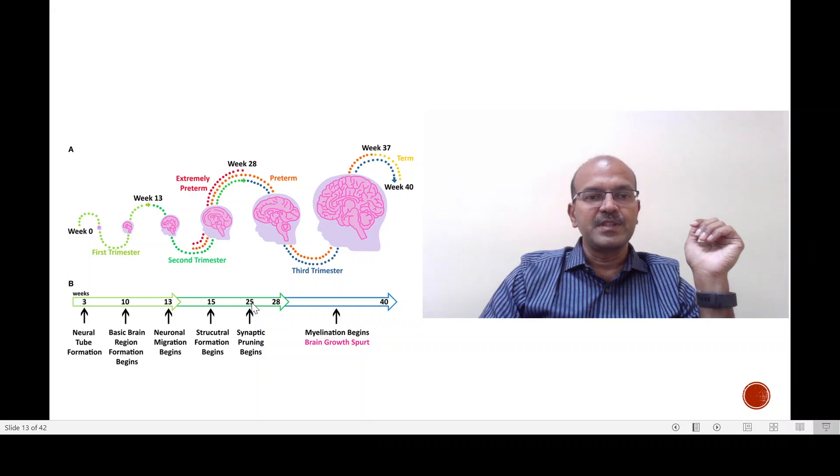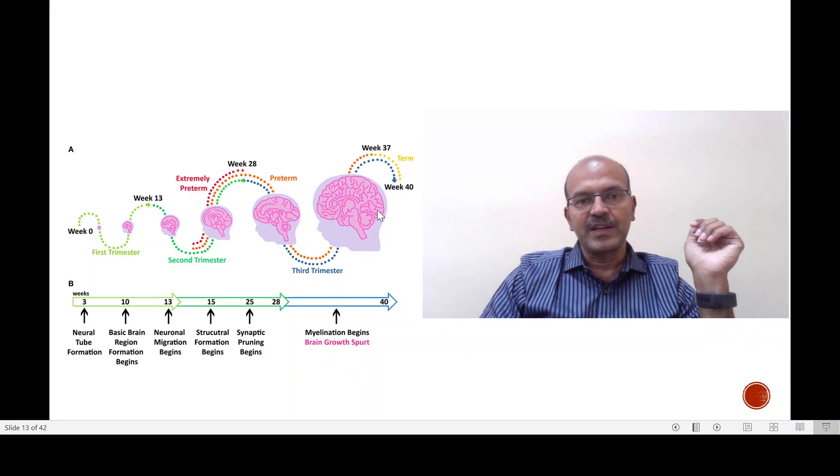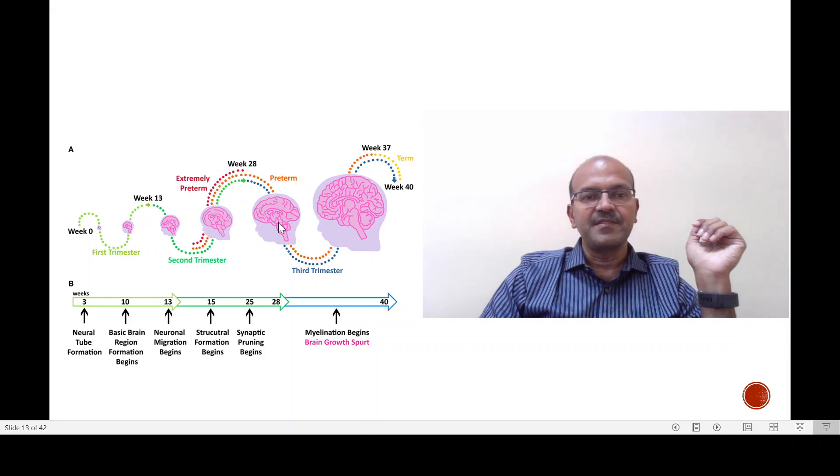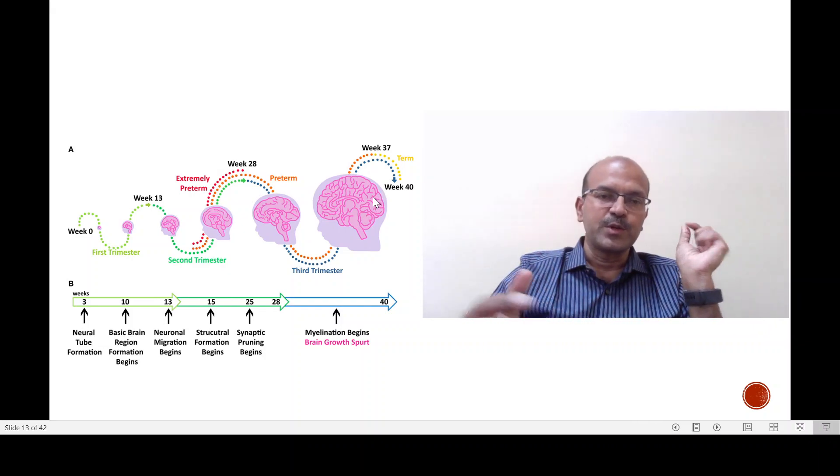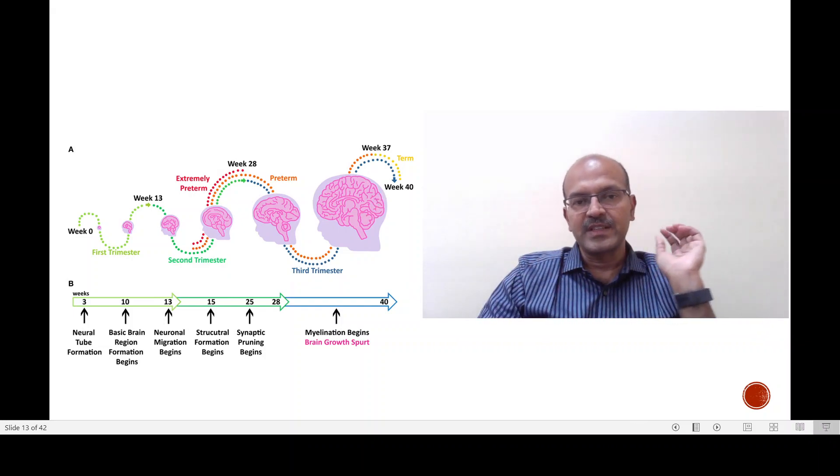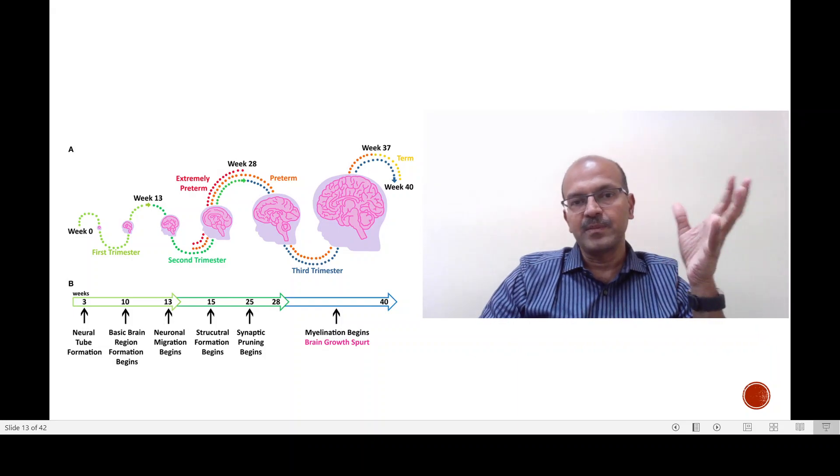From 25 weeks onwards there is synaptic pruning starting, myelination begins and there is a growth spurt of the brain once the baby is close to be born or after birth as well. There is a progressive increase in size and complexity of the brain. As you can see this is a very smooth surface of the brain right till the 28 week stage. After that the complexity, the folding develops more and more. The folding allows more surface area to accommodate more tissue and the brain is capable of functioning more.